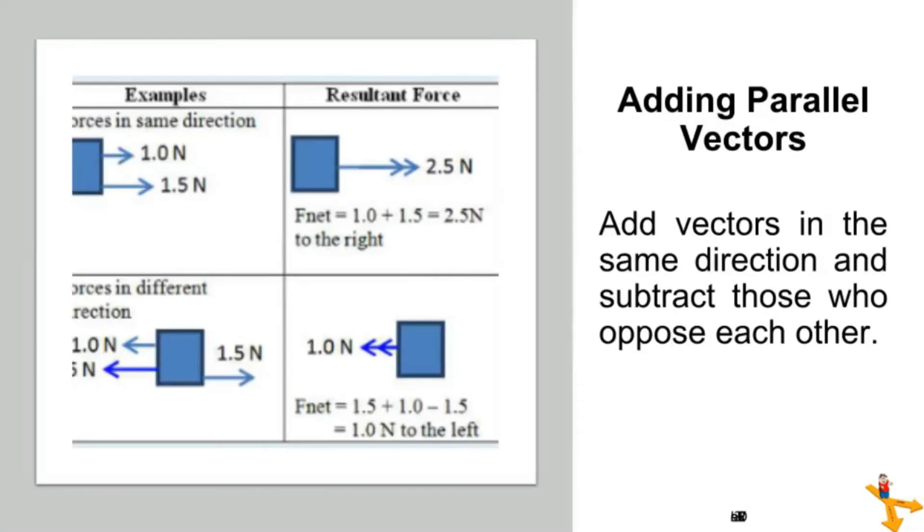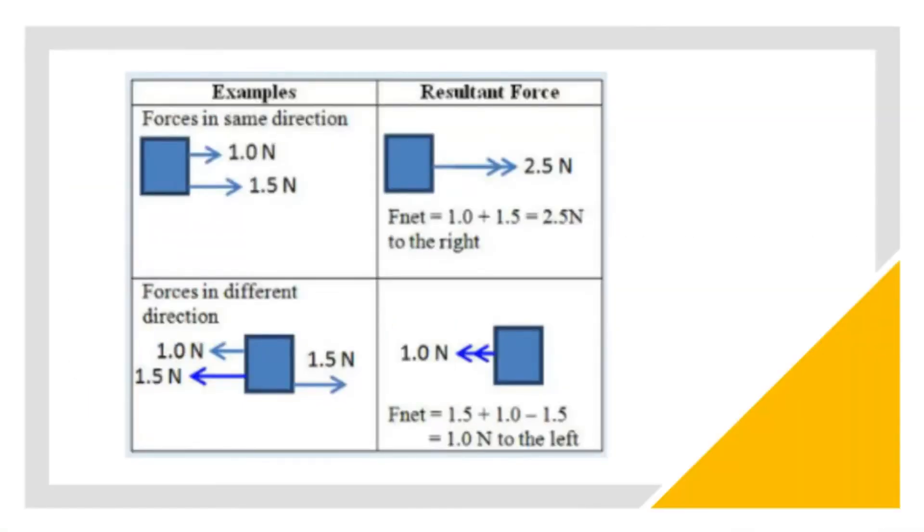Adding parallel vectors. To add parallel vectors, we just need to consider the direction. We add vectors in the same direction and subtract those who oppose each other. For the first example, the forces 1 newton and 1.5 newton are both directed to the right. So the F net will be 1 plus 1.5 equals 2.5 newtons to the right.